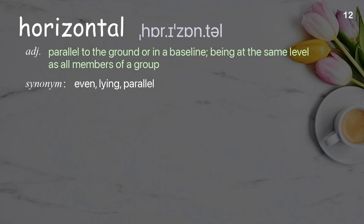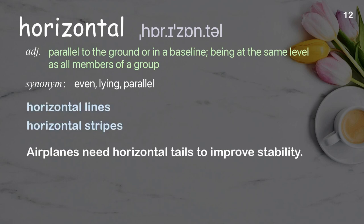Horizontal: parallel to the ground or a baseline; being at the same level as all members of a group. Examples: horizontal lines, horizontal stripes. Airplanes need horizontal tails to improve stability.